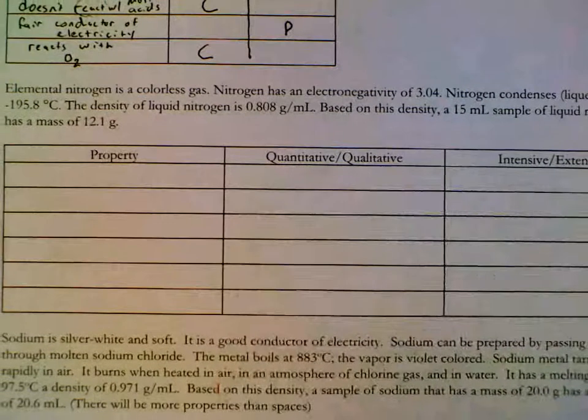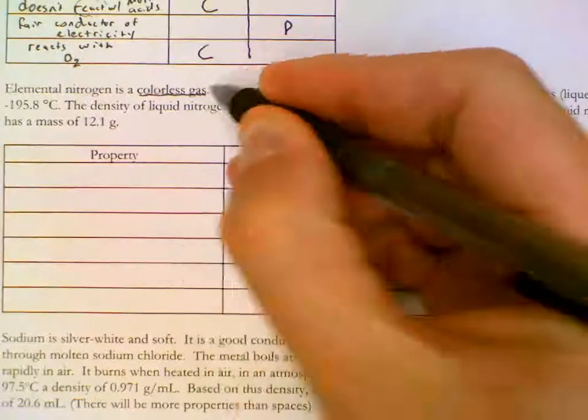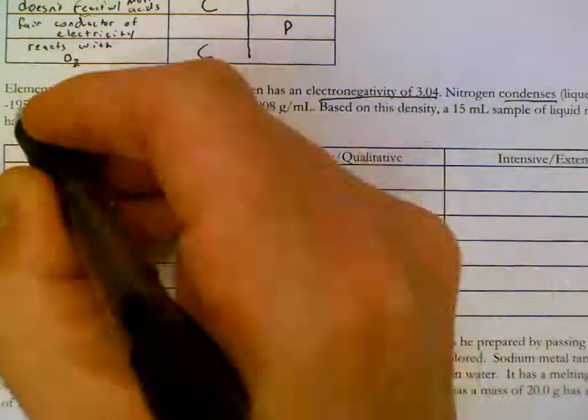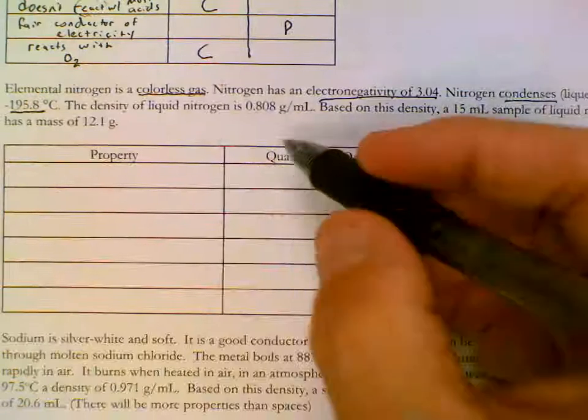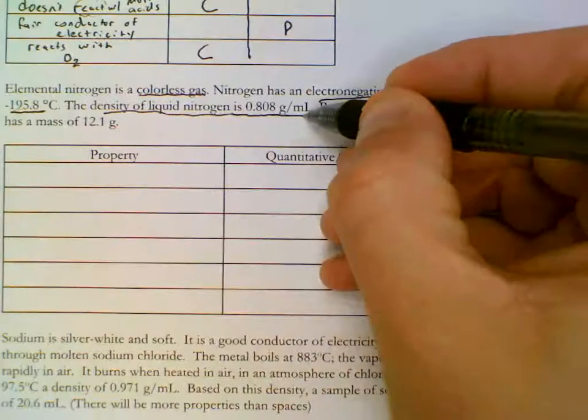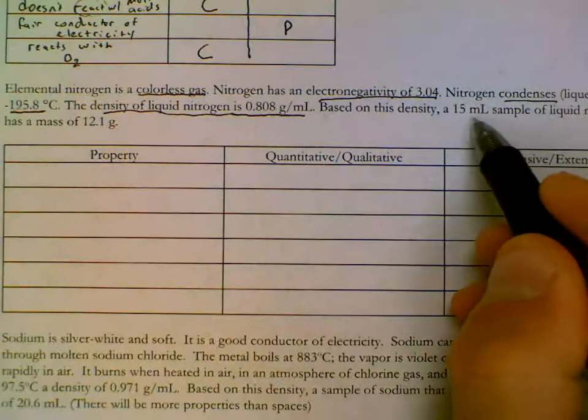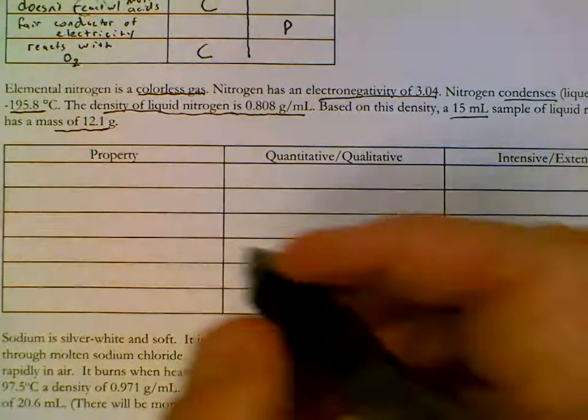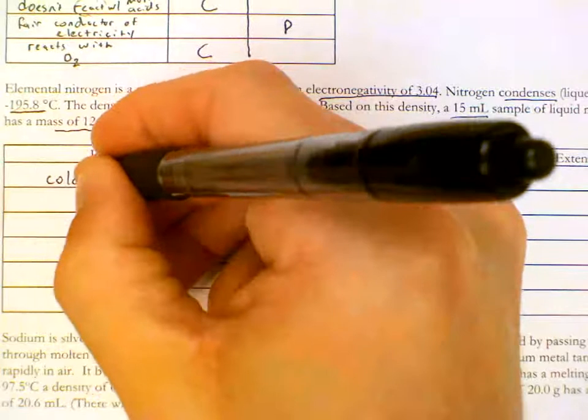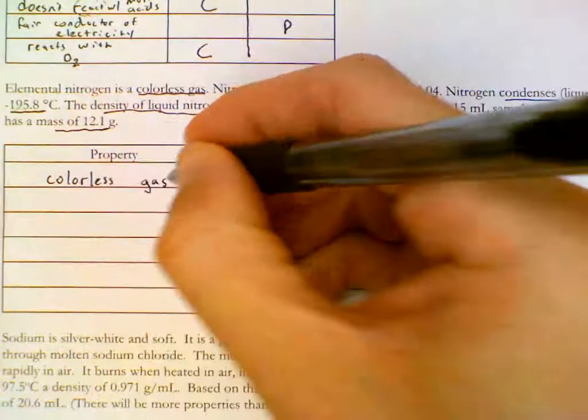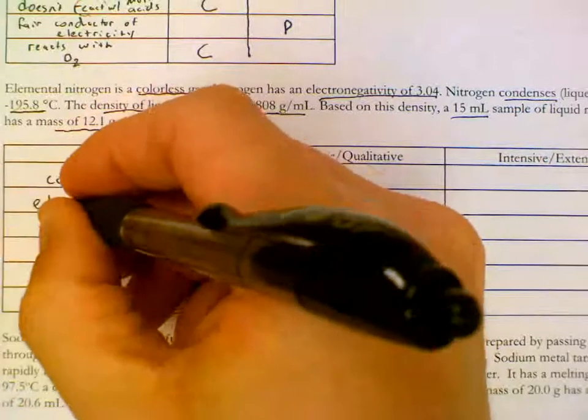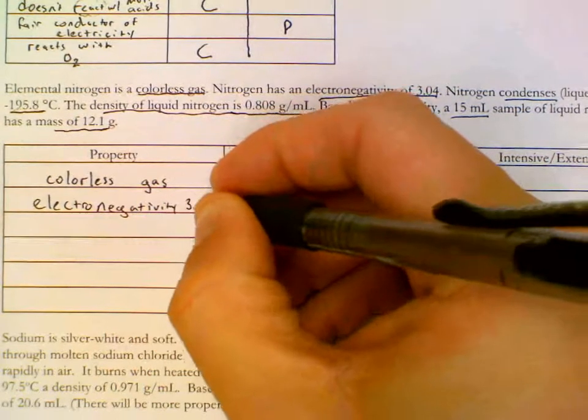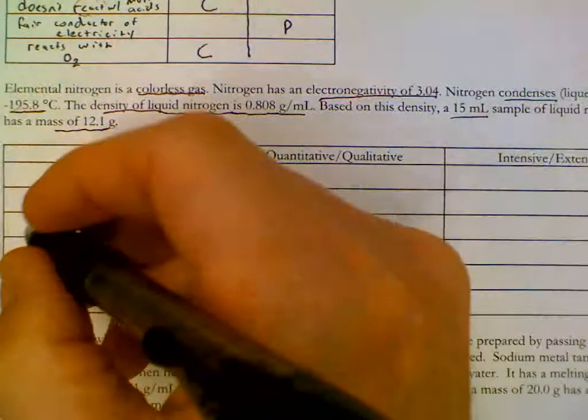Elemental nitrogen is a colorless gas. It has an electronegativity of 3.04. It condenses at that temperature. Density is this value. So here's the density. 15 ml sample. It has 12.1 grams. So, colorless gas. Electronegativity. Density.